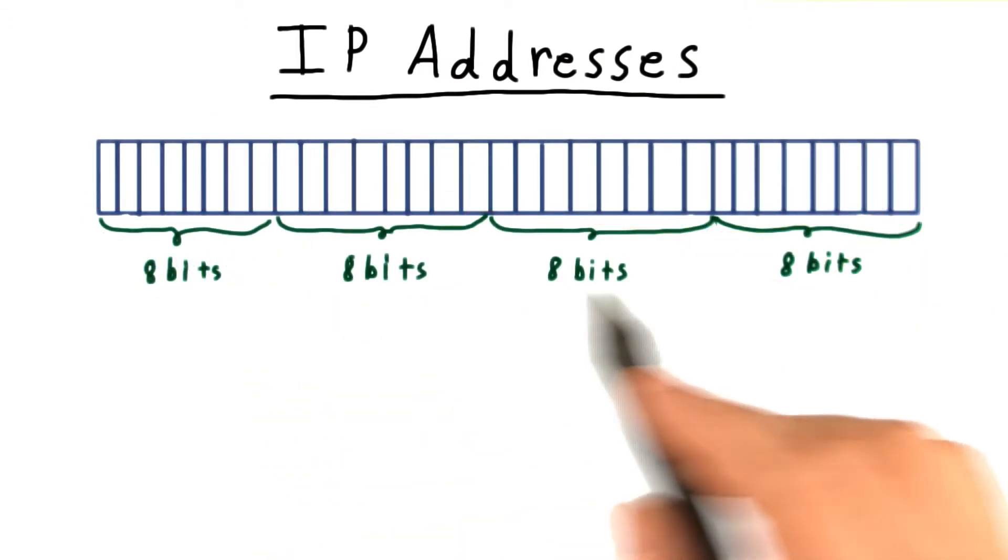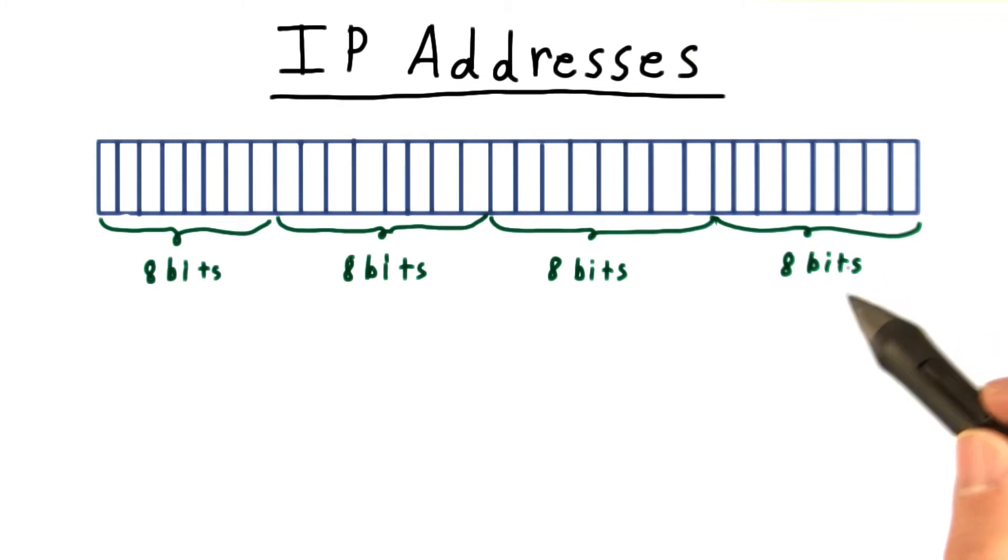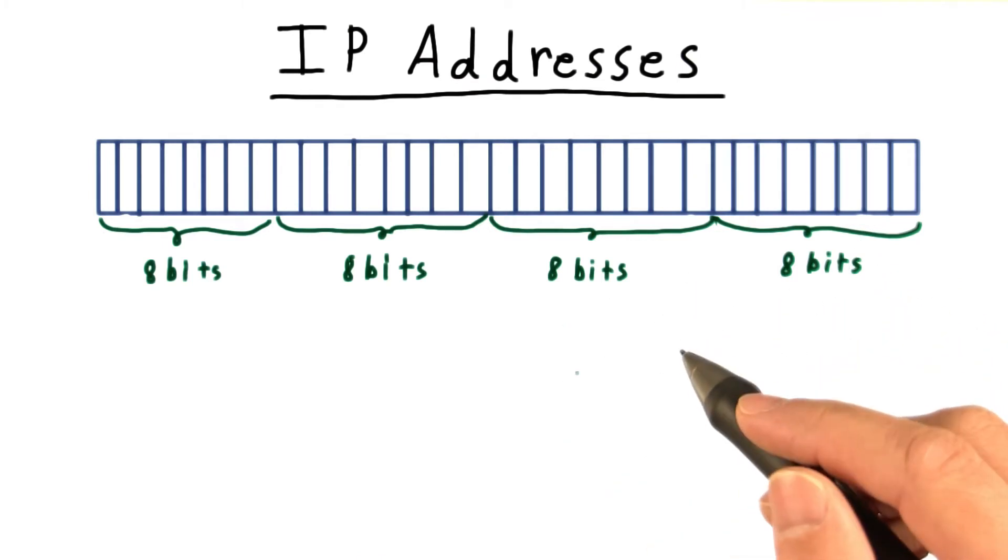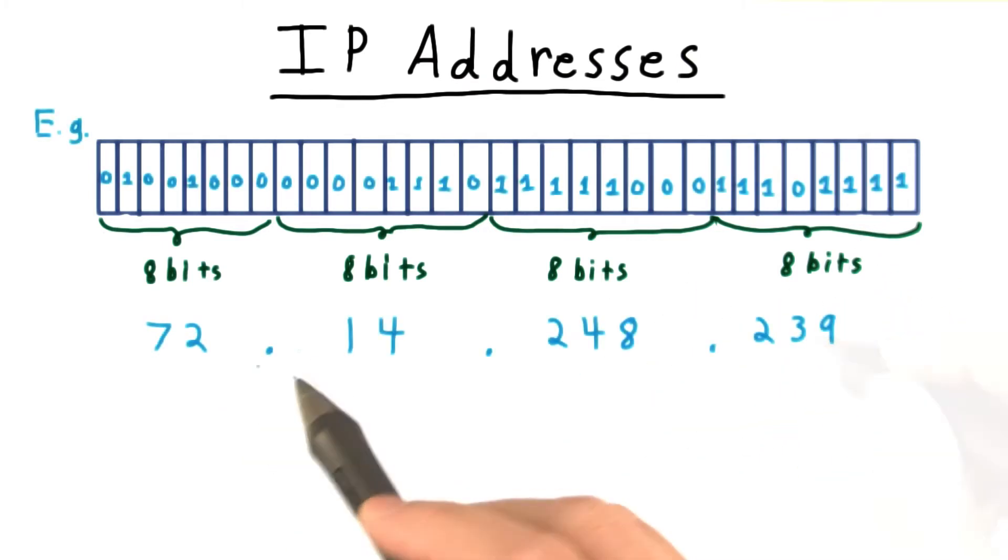Every machine on the Internet proper gets a unique 32-bit address, which is usually written out as four decimal numbers between 0 and 255. For example, 72.14.248.239 is currently the IP address for Udacity's homepage.